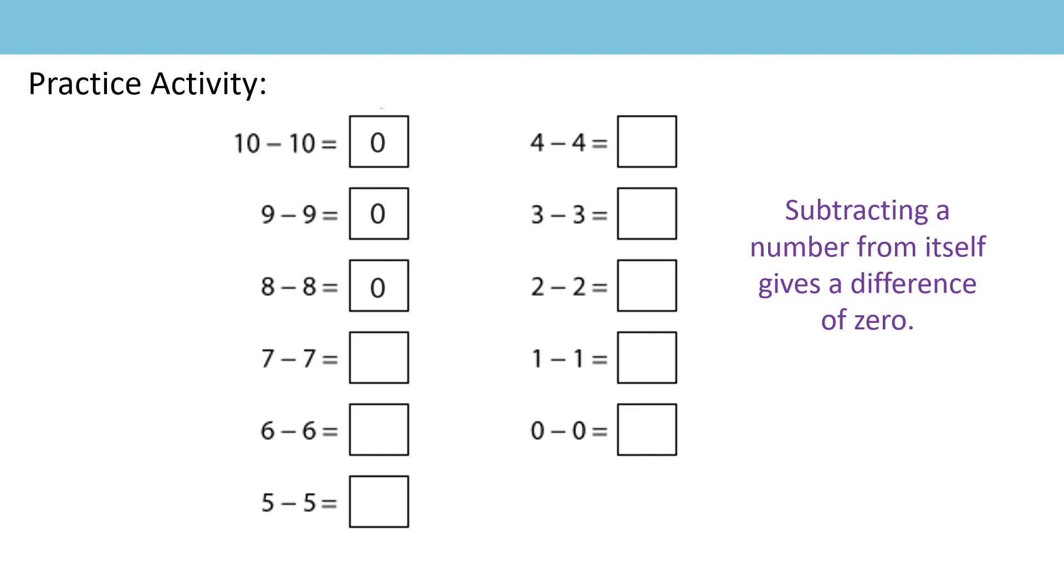When we subtract a number from itself, we have a difference of zero. Because in all of these questions, the amount that I've started with is the same amount that I'm subtracting. So I will always get a difference of zero.